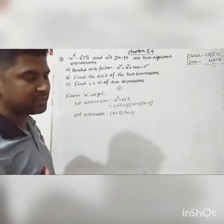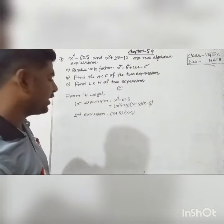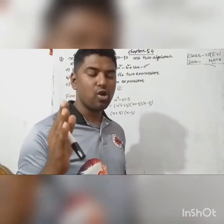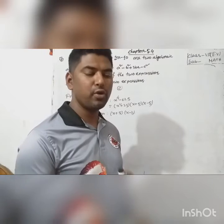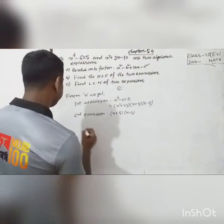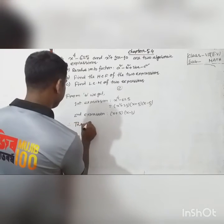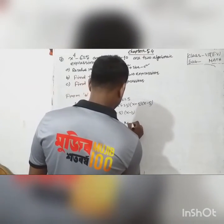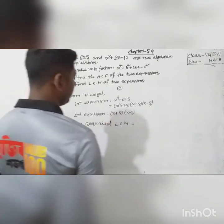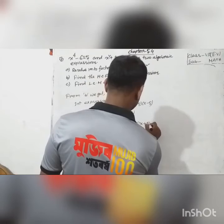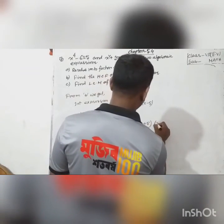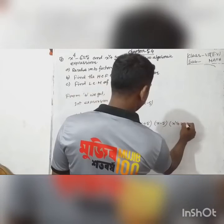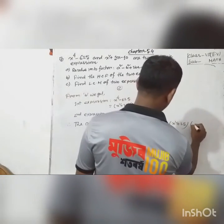We find the LCM of the two expressions. LCM means we take the common factor and all uncommon factors together. The common factor is (x plus 5). The uncommon factors are (x minus 5), (x² plus 25), and (x minus 2). So the required LCM equals (x plus 5)(x minus 5)(x² plus 25)(x minus 2).